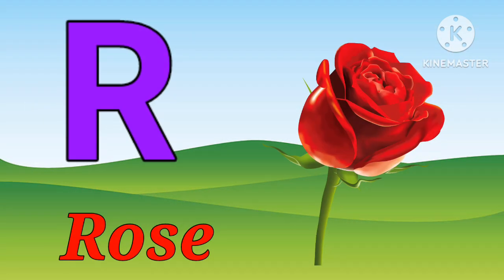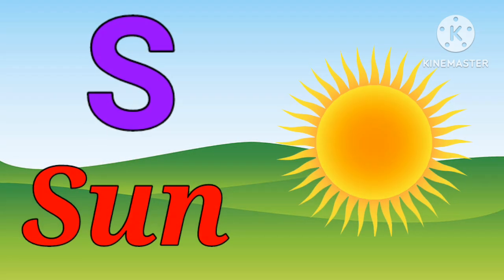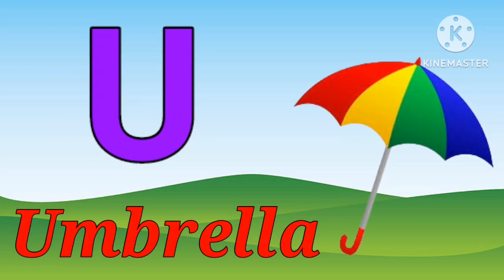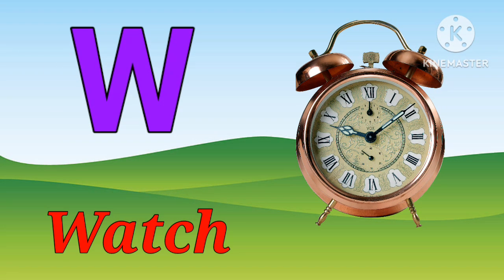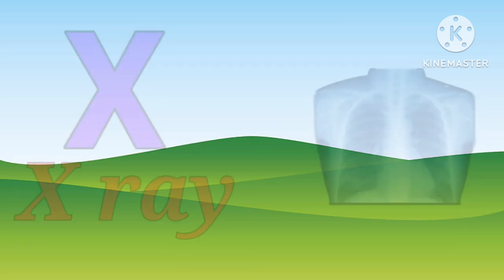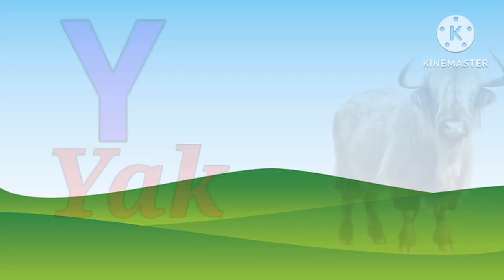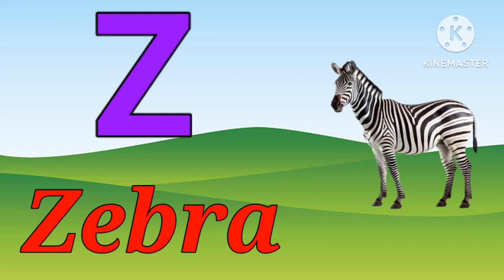R for rose, S for sun, T for tiger, U for umbrella, V for van, W for watch, X for X-ray, Y for yak, Z for zebra.